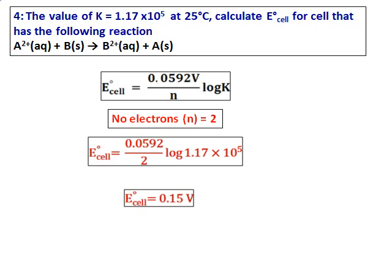And therefore, n is equal to 2. Substitute all the values into the equation and get the value of E cell. And that comes as 0.15.